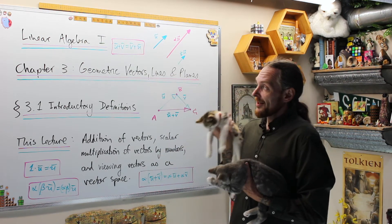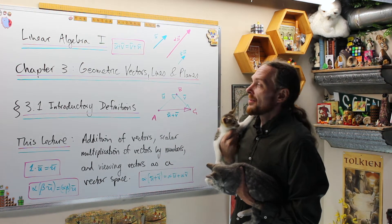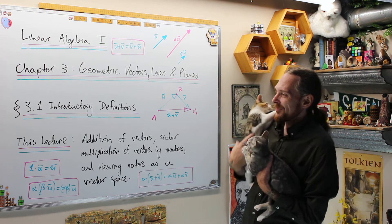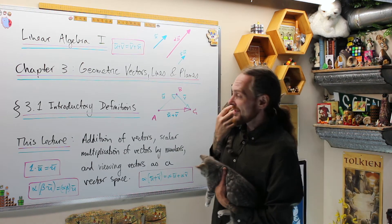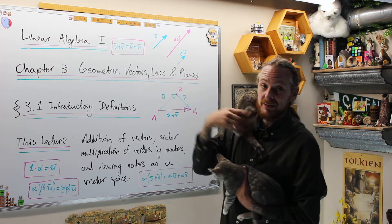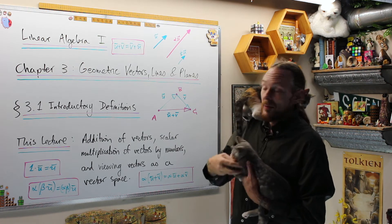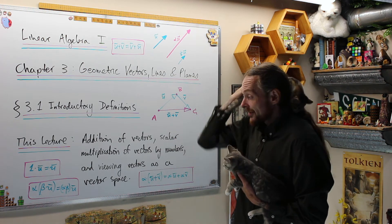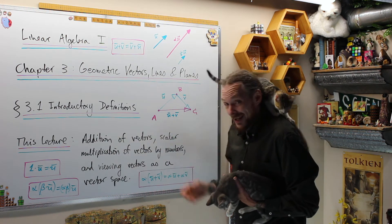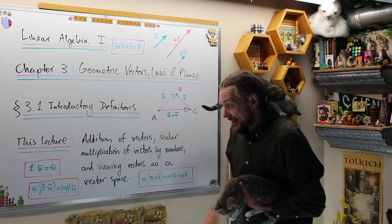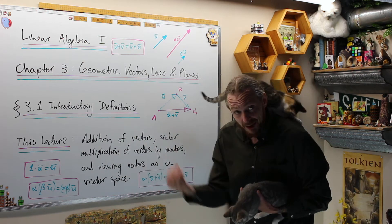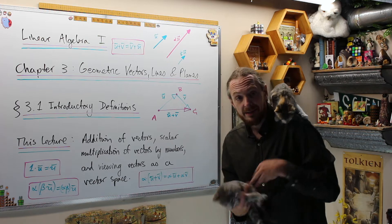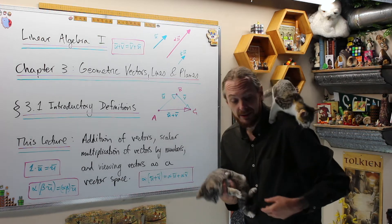Right now we're doing a linear algebra one. This is chapter three, geometric vectors, lines and planes. Section 3.1 specifically is introductory definitions. This lecture, what we're going to do is addition of vectors, scalar multiplication of vectors by numbers, and viewing vectors as what we're going to call a vector space, creating a bunch of rules or axioms. All right, let's do it.